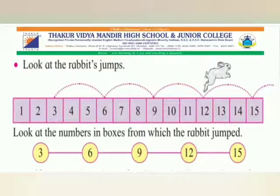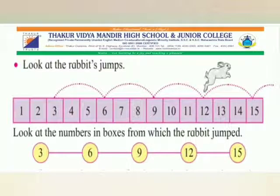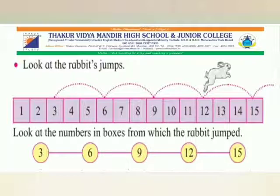Look at the rabbit's jump. Look at the numbers in the boxes from which the rabbit jumps. If we count 3 numbers after the number 3, we get number 6. On counting 3 numbers after 6, we get 9. By counting 3 forward every time, we get each next number. Starting from 3 and counting in steps of 3, the numbers we get are 6, 9, 12, and 15.